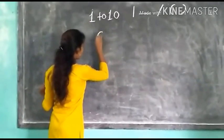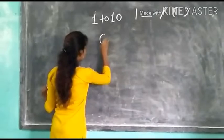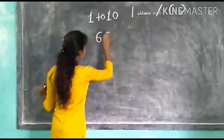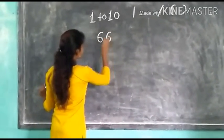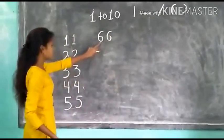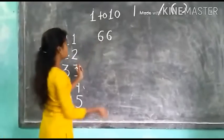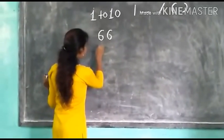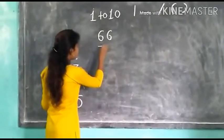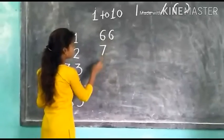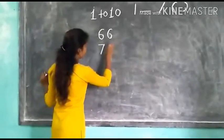Next number is 6. Curved and curved. Number 6. Next number is 7. Sleeping line and sliding line. 7.